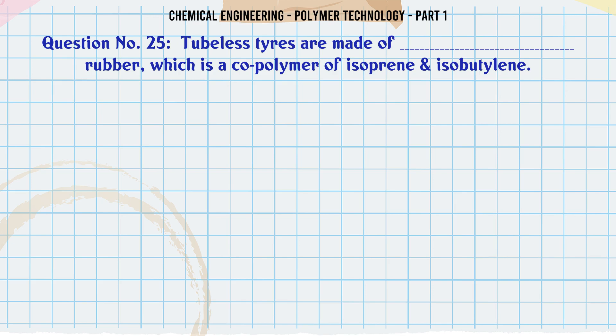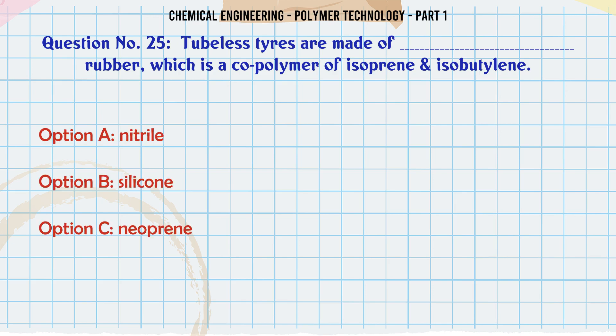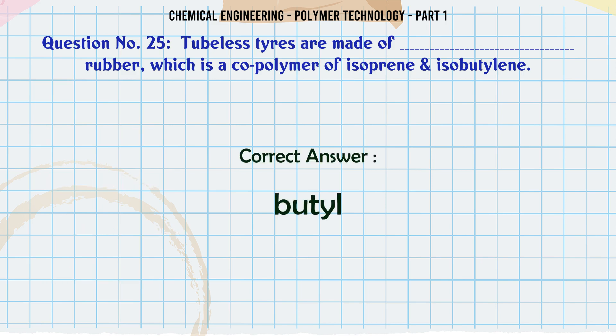Tubeless tires are made of a rubber which is a copolymer of isoprene and isobutylene: A. Nitrile, B. Silicone, C. Neoprene, D. Butyl. The correct answer is Butyl.